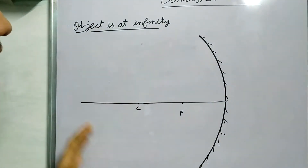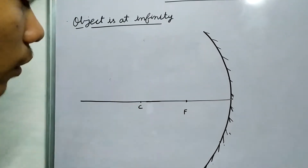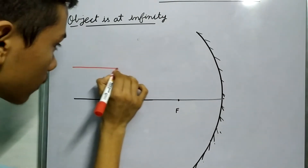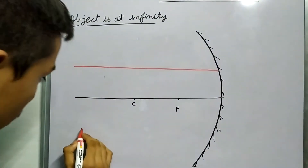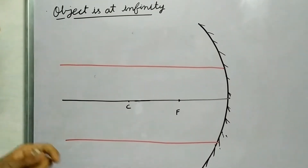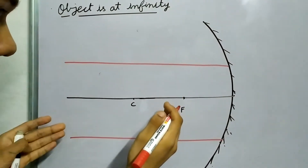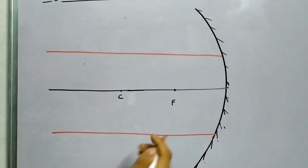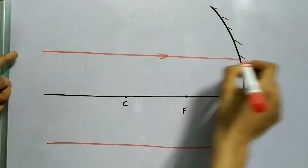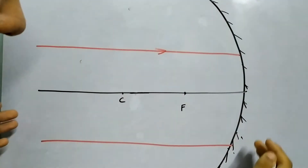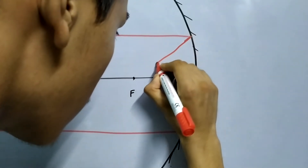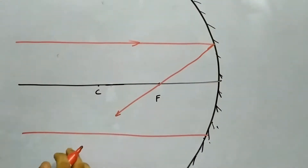We can assume or approximate all the rays to be parallel and then let us see how the image will form. We can draw parallel rays. Now what happens to a ray just parallel to the principal axis upon reflecting by a mirror? If you remember, in the previous video I told you that if a ray passes just parallel to the principal axis, gets reflected and passes through the focus. This ray will pass through the focus.